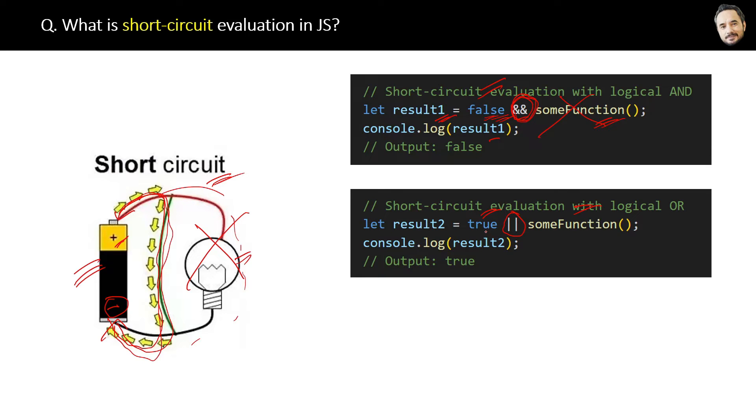So again, OR will only evaluate the left side expression which is true. A short circuit will happen and therefore the right side function will never be evaluated. But yes, if the left side is false, then short circuit will not happen.